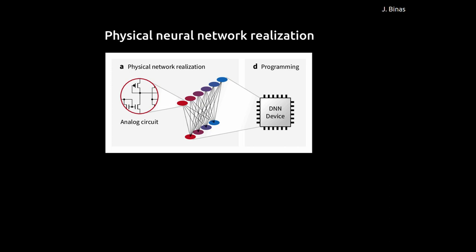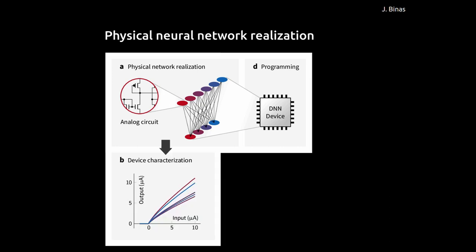We can fabricate such a chip based on analog circuits and then measure it. And we would see something like this — the responses of different neurons on the device, showing output current as a function of input current. It's obvious that different neurons don't do exactly the same; they all respond slightly differently. This is due to the imperfections inherent to any fabrication process — slight deviations in the local properties of the silicon do have an effect on the computation.